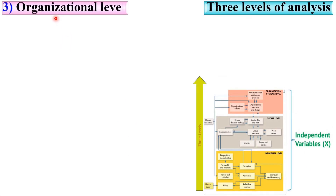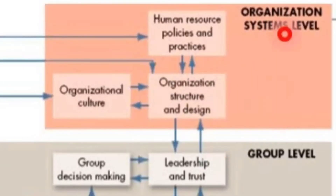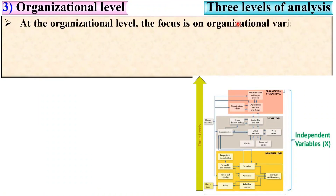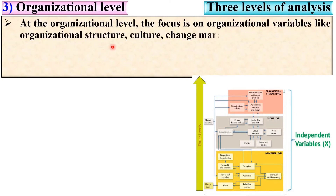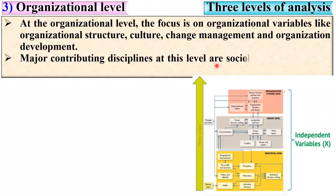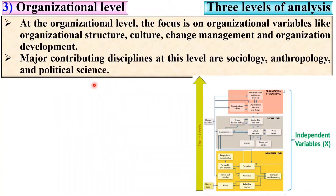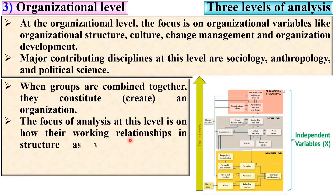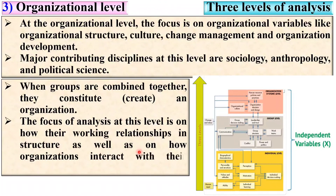The last level of the organizational model is the organizational level, sometimes called the structure level. At this level, the focus is on organizational variables like organizational structure, organizational culture, change in management, and organizational development. Major contributing disciplines are sociology, anthropology, and political science. The focus of analysis is on working relationships in structure and on how organizations interact with their external environmental forces.